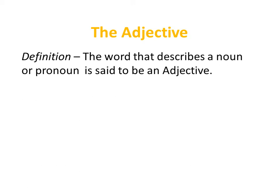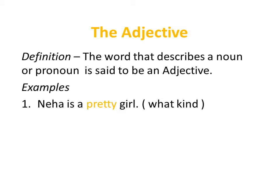An adjective is a word that describes a noun or pronoun in a sentence. For example, 'Neha is a pretty girl.' Here the word 'pretty' is describing Neha, and words that tell us what kind of a girl or boy is are called adjectives.